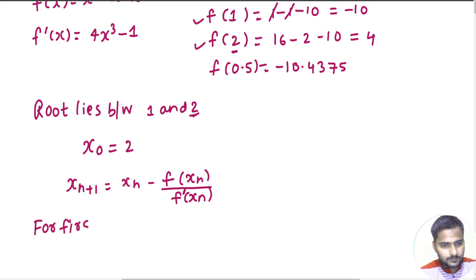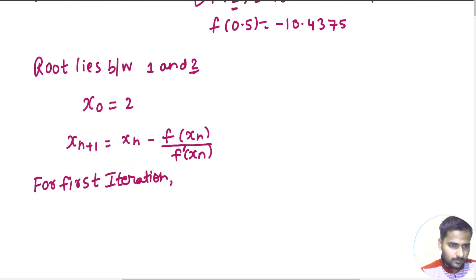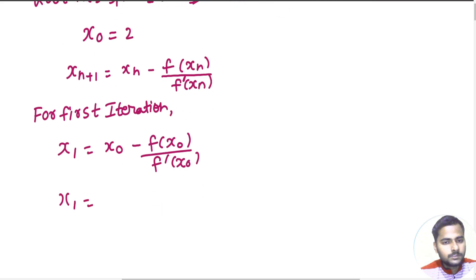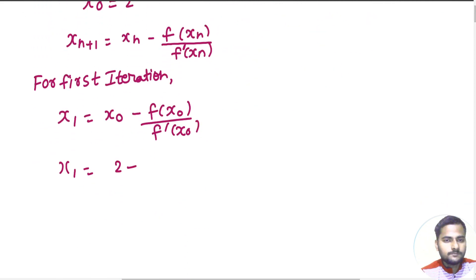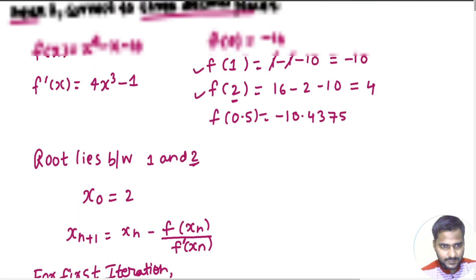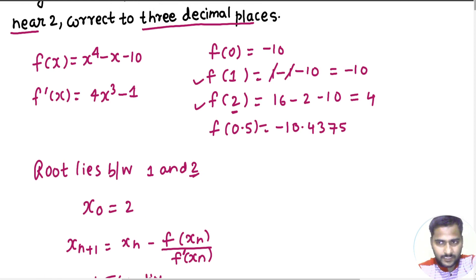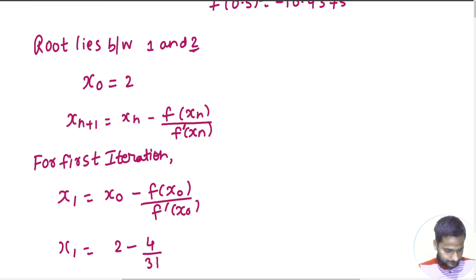For first iteration, put n equals to 0, so you are getting x1 equals to x0 minus, x0 value is 2, value of function at 2 is 4, value of derivative at 2 is 32 minus 1, 31. So, it is 2 minus 4 by 31, so this is giving me 1.87096.